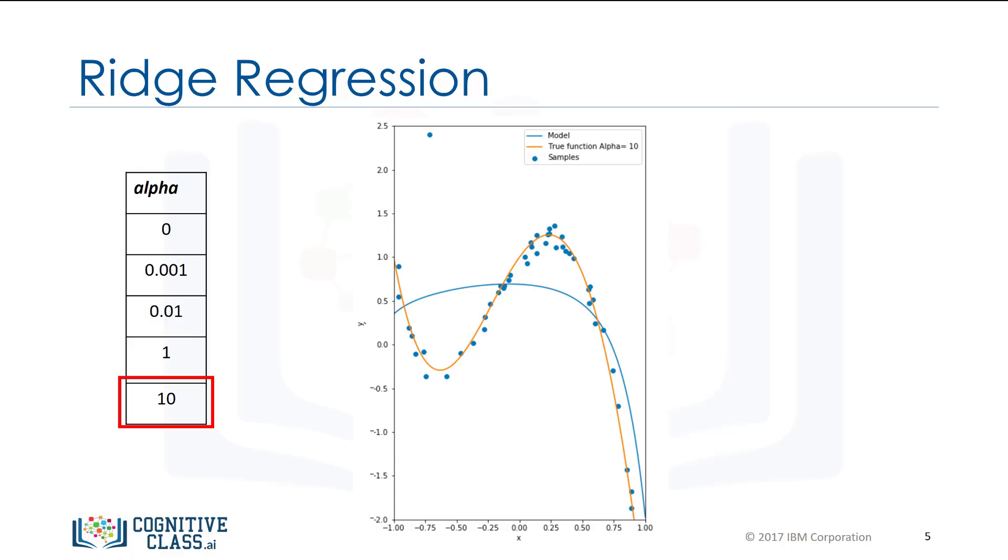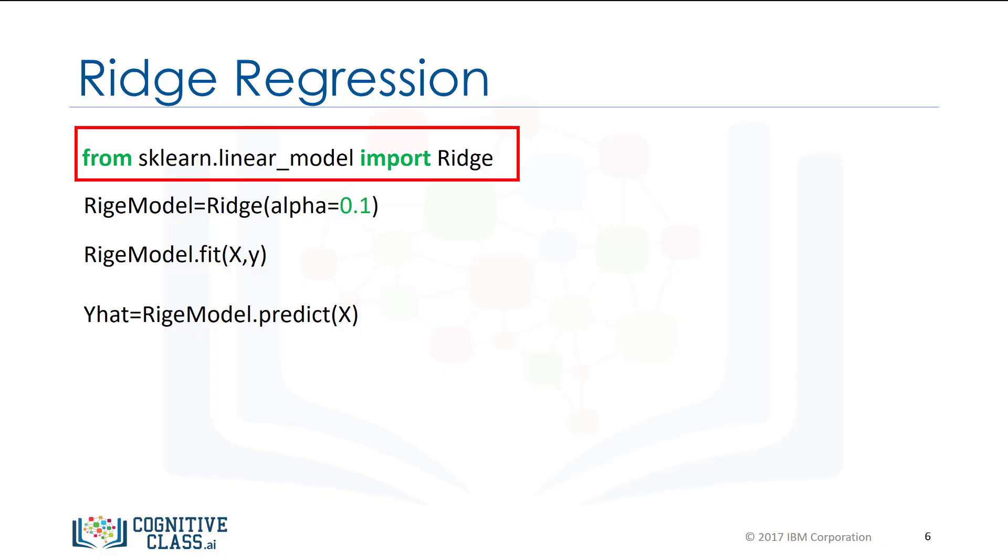In order to select alpha, we use cross-validation. To make a prediction using ridge regression, import ridge from sklearn.linear_model. Create a ridge object using the constructor. The parameter alpha is one of the arguments of the constructor.